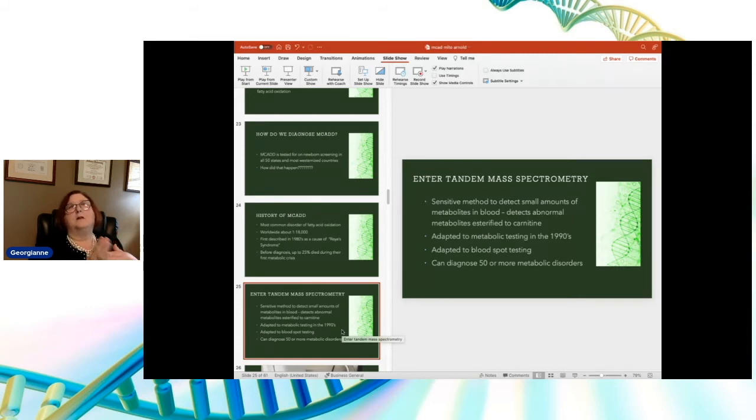So enter something called tandem mass spectrometry. This is a really sensitive method that detects tiny amounts of metabolites in your blood. And it does them because they can join or esterify carnitine. So I didn't talk about carnitine yet. Carnitine is kind of like a vitamin in your body. Your body makes it and you consume it. And carnitine's main job is to esterify - the medical word - or glom onto, hook onto that carnitine.